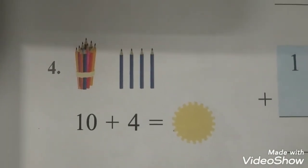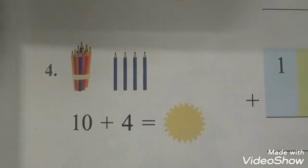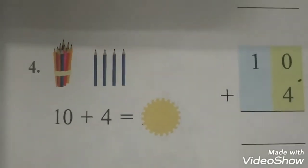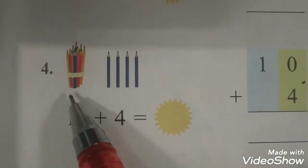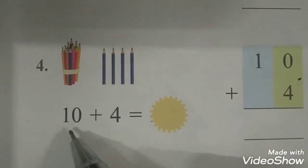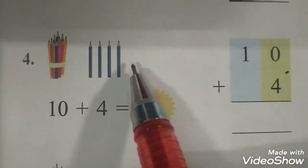Now as you can see here, instead of matchsticks we are having bundles of 10 pencils. If you can see here we have a bundle of 10 pencils. This is one bundle and here we have written 10 because this is a bundle of 10 pencils, and we have 4 loose pencils.